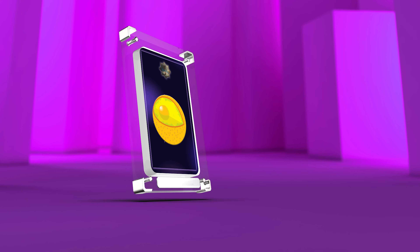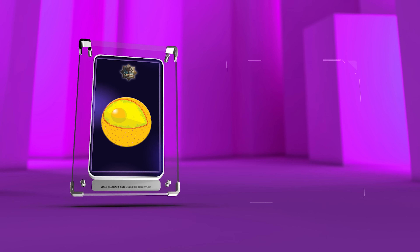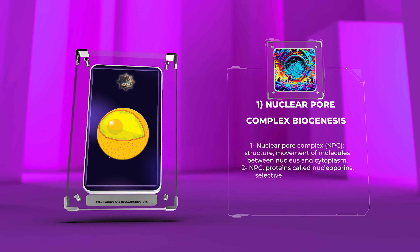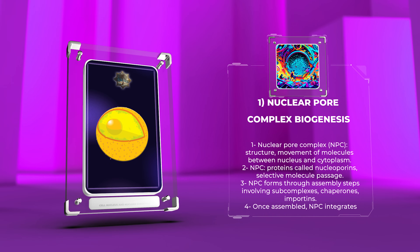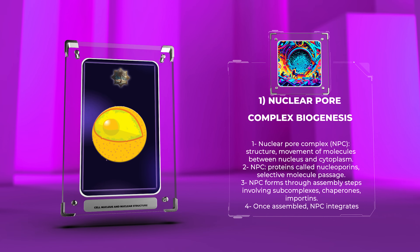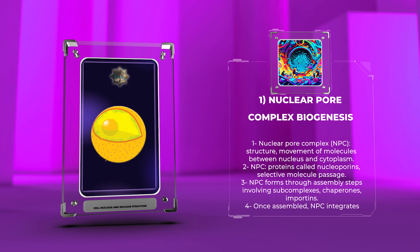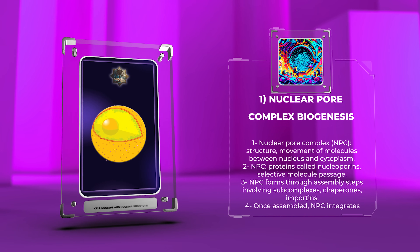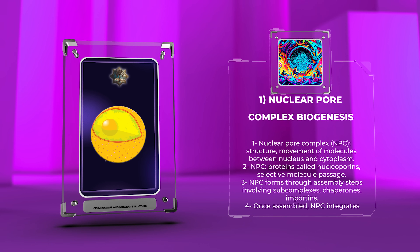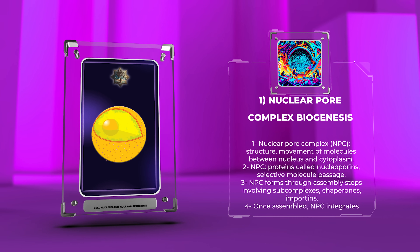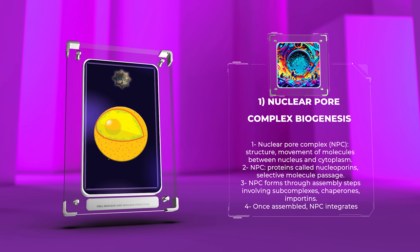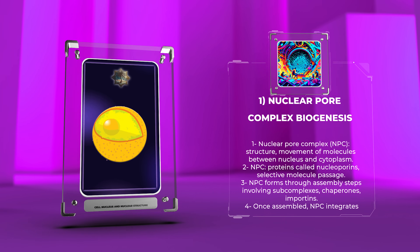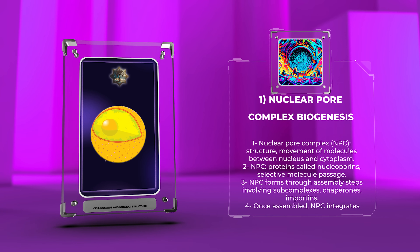The nuclear pore complex (NPC) is a structure that controls the movement of molecules between the nucleus and cytoplasm. It is made up of proteins called nucleoporins, which selectively allow certain molecules to pass through. The NPC forms through a series of assembly steps, involving subcomplexes that are transported to the nuclear envelope and further assembled with the help of chaperones and importins.